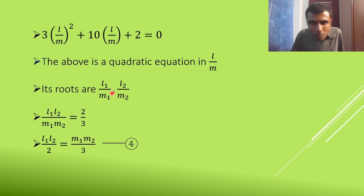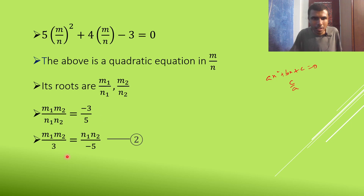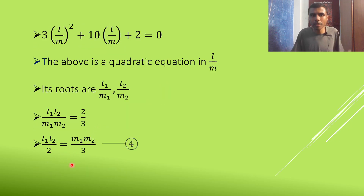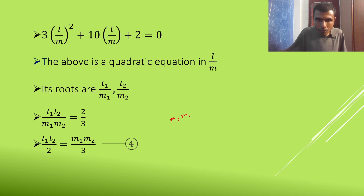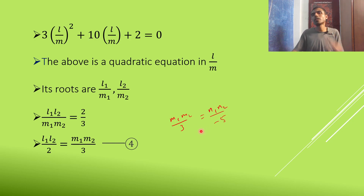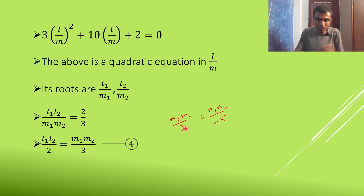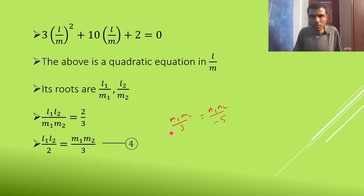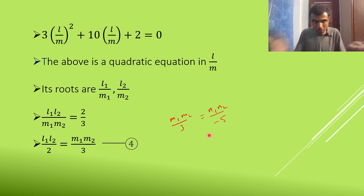Now see — equation 4 gives L₁L₂/2 = M₁M₂/3, and equation 2 gives M₁M₂/3 = N₁N₂/(−5). Since A = B and B = C, we get: L₁L₂/2 = M₁M₂/3 = N₁N₂/(−5).